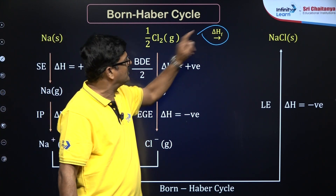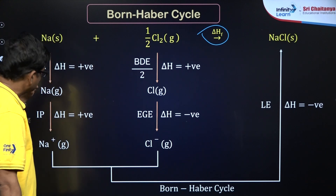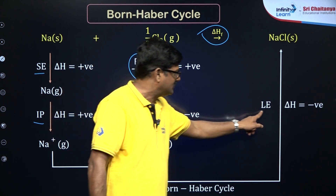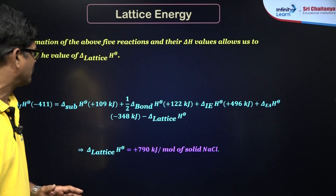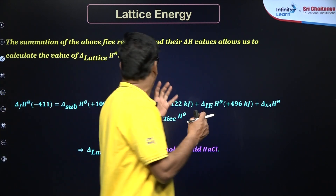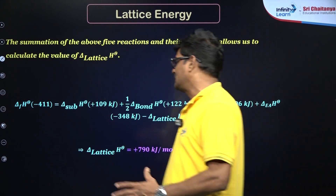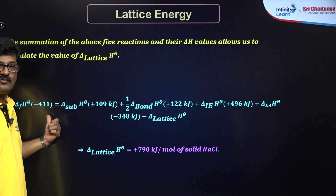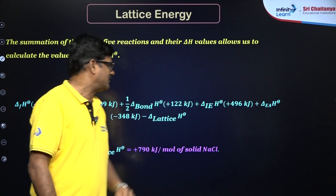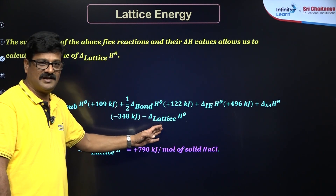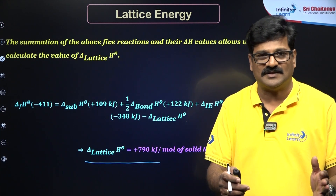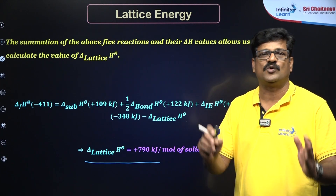This is the direct step, and the sum of all the indirect steps must equal it — calculated using Hess's Law of constant heat of summation. The summation of the above five reactions and their ΔH values allows us to calculate the lattice energy: enthalpy of formation (minus 411 kJ) equals sublimation energy plus bond dissociation energy plus ionization energy plus electron affinity minus lattice energy. On solving, the lattice energy is calculated as 790 kJ.